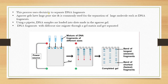This process uses electricity to separate DNA fragments. Agarose gel has a large pore size, so it is normally used for the separation of large molecules such as DNA fragments. Using a pipette, DNA samples are loaded into slots made in the agarose gel.